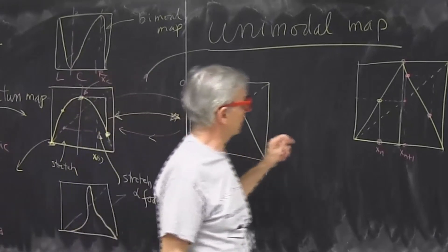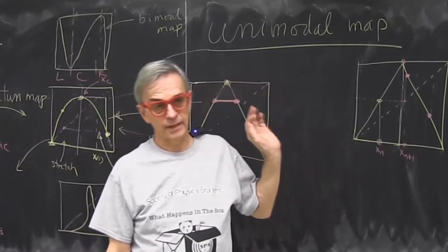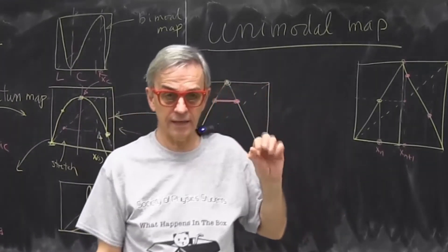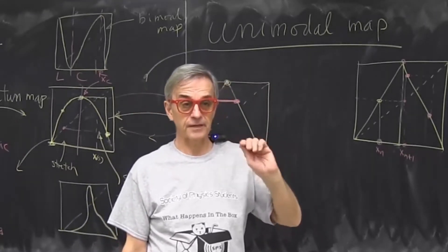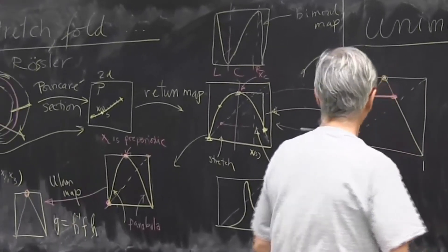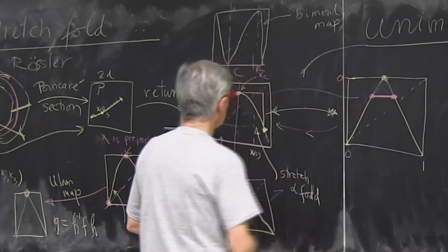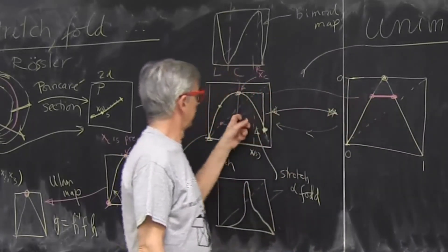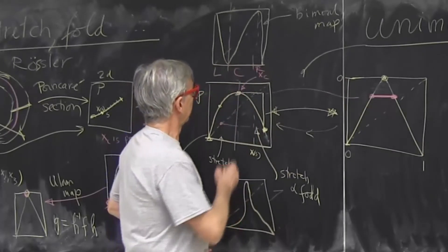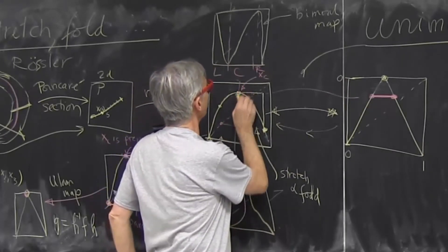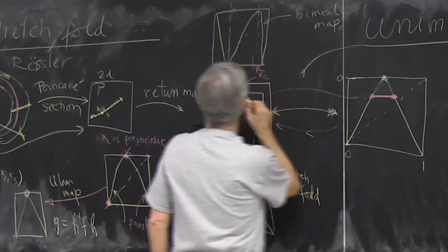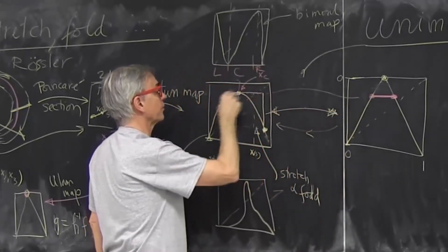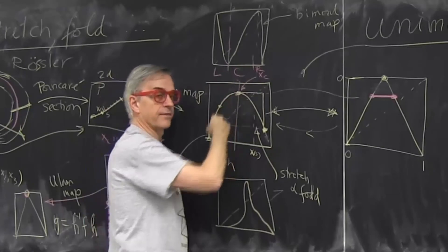Now, for unimodal maps, this is the sole problem. So that's why I'm doing it. It's the only case where we know how to specify the grammar and specify all admissible sequences. And the way we do this is we go from here to there. So what does that mean? We find a point on this map. This critical point goes around and does something.